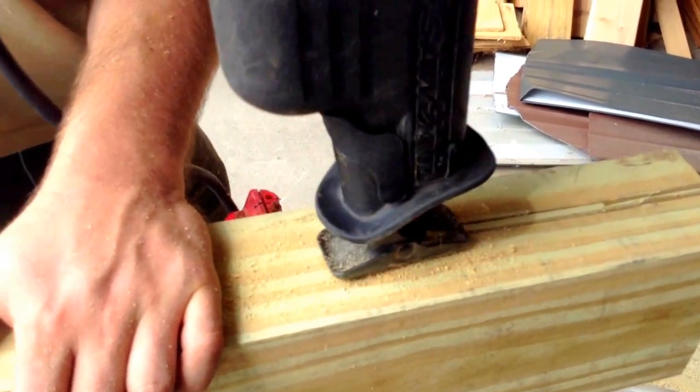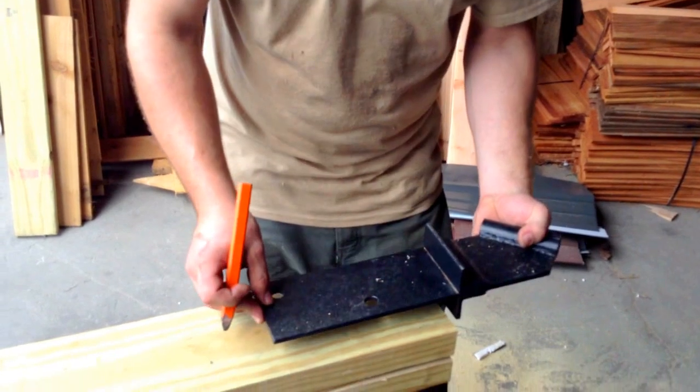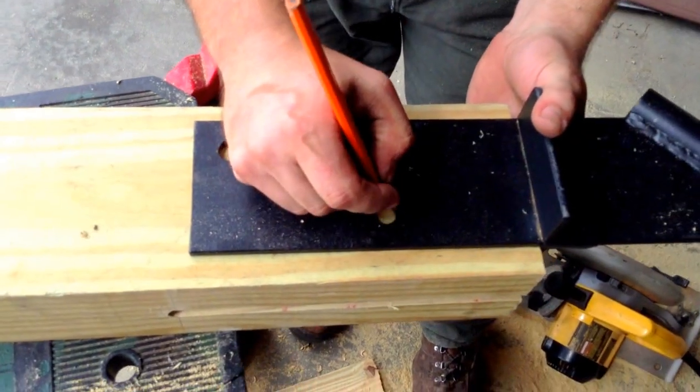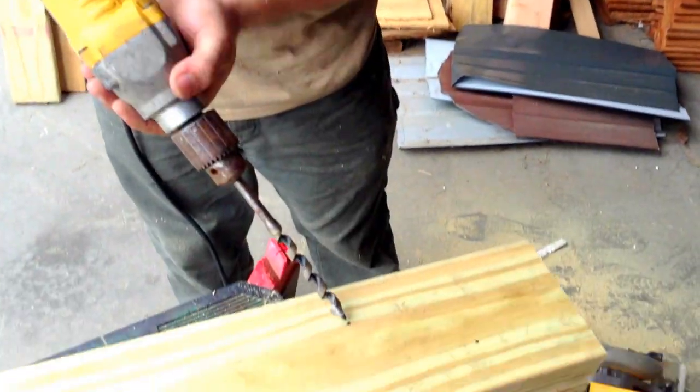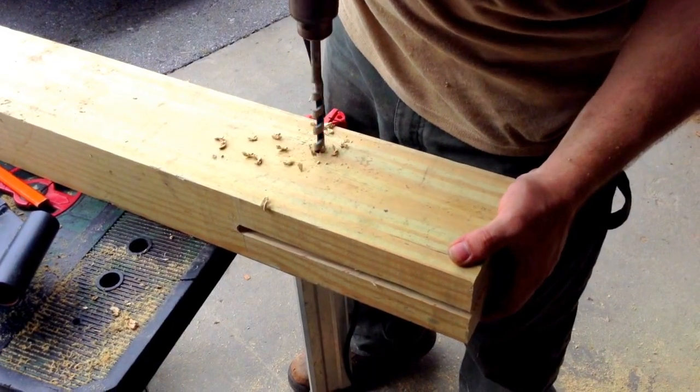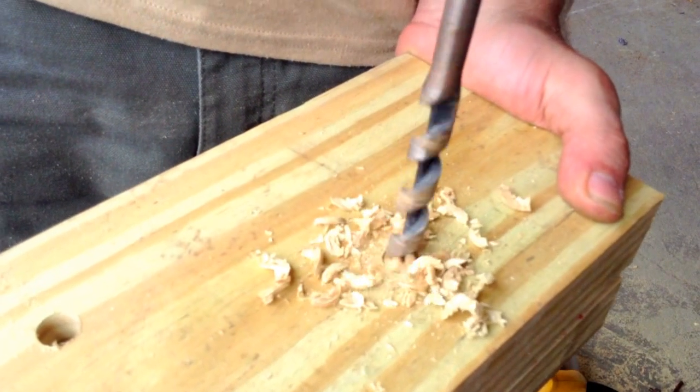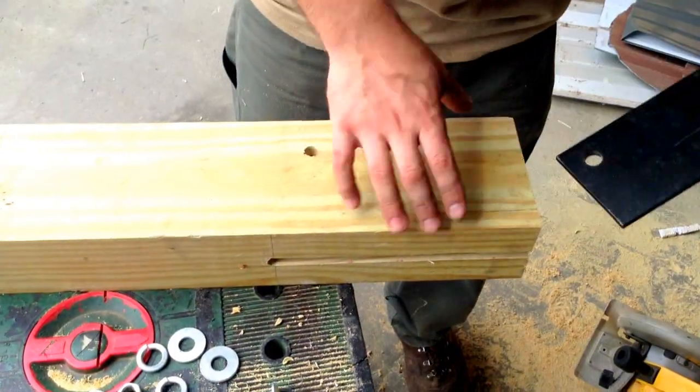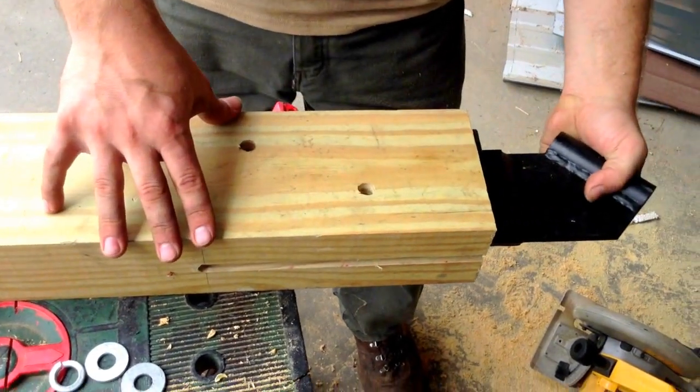Now that the notch is cut, hold up the knee brace bracket in the center and mark where the two carriage bolts will go. Using a 5/8ths bit, make two plumb holes at these marks. Now slide in the bracket and install the accommodating hardware.